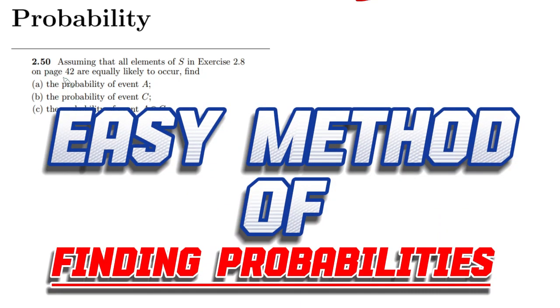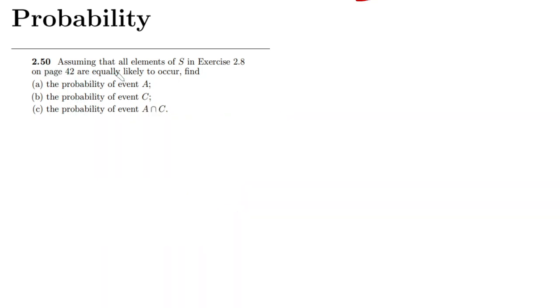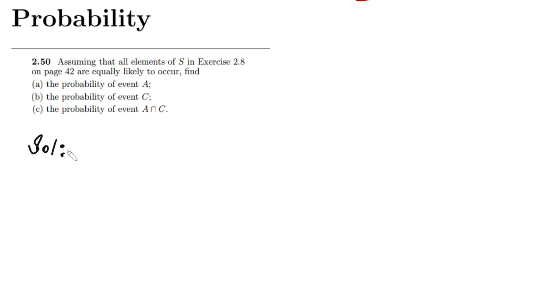Today we are going to talk about probabilities. In this question we have to assume that all elements of S in exercise 2.8 on page 42 are equally likely to occur. We have to find the probability of event A, probability of event C, and probability of A intersection C. Without going into the details of exercise 2.8, let me define my own sets here.